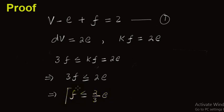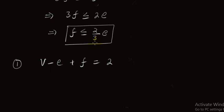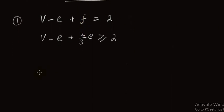I use this relation with equation number one. Equation one is v minus e plus f equals 2. If I use a term greater than f, so replacing f with 2/3 e, this equality converts into an inequality: v minus e plus 2/3 e is greater than or equal to 2. Since f is less than 2/3 e, we get v minus e over 3 is greater than or equal to 2.